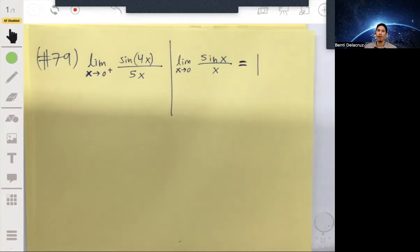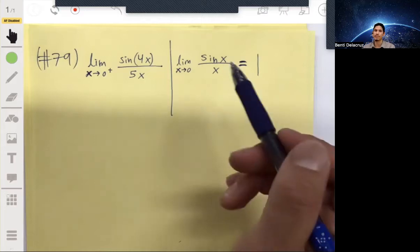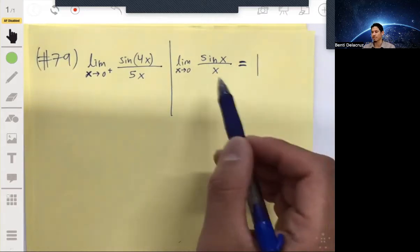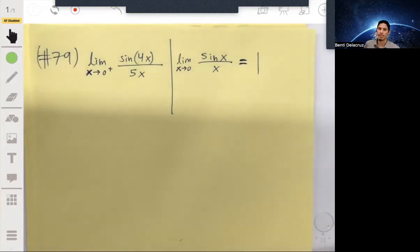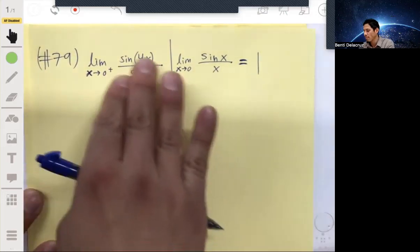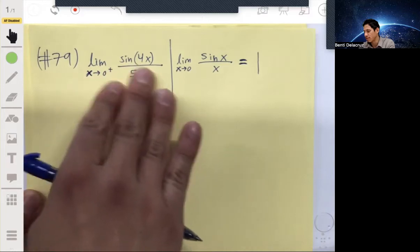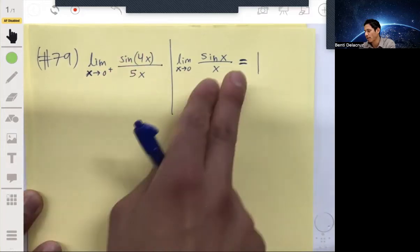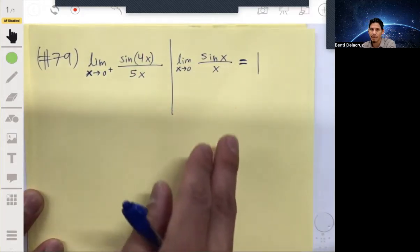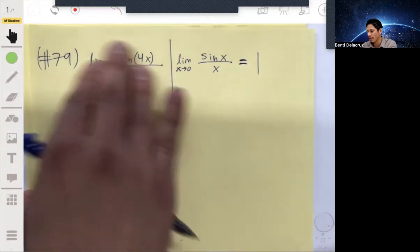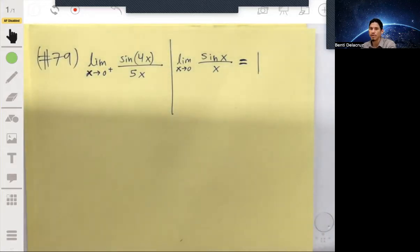Throughout the course it'll pop up, it'll sneak up on you. There's a proof you can always go through, but it's not necessary to prove it each time. So just remember this theorem. The idea is to do some trickery to make this become this in some form, that way we can apply this limit and then evaluate.